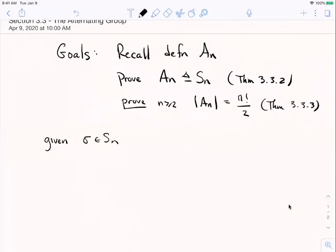We proved last time that given a permutation sigma in Sn, that it is possible to write sigma as a product of transpositions. So sigma ends up looking like, say, tau 1 times tau 2 up to, say, tau m, where each tau is a transposition. The transposition, a permutation that interchanges two elements and fixes everything else.